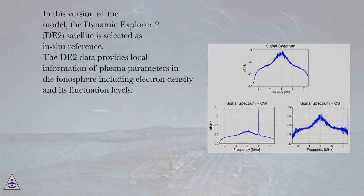In this version of the model, the Dynamic Explorer 2 (DE2) satellite is selected as in-situ reference. The DE2 data provides local information of plasma parameters in the ionosphere including electron density and its fluctuation levels.